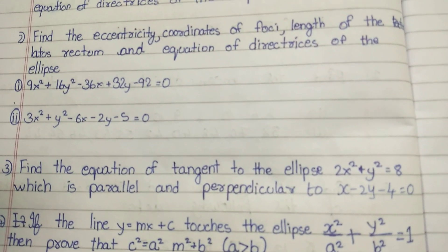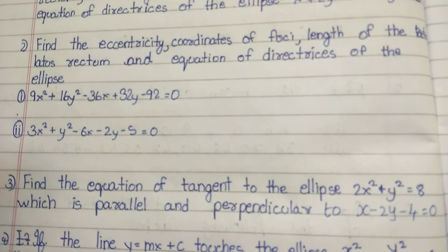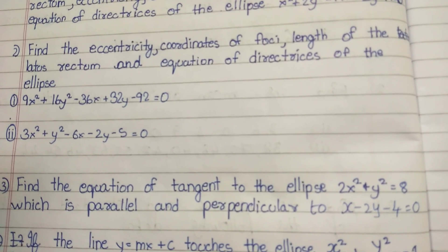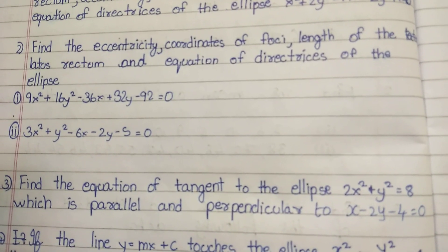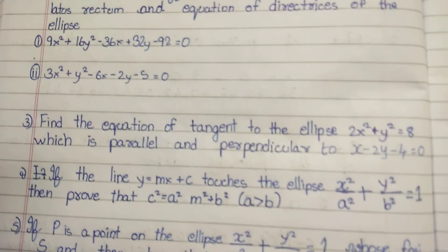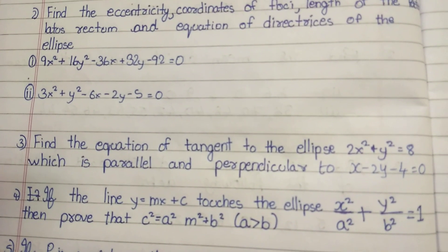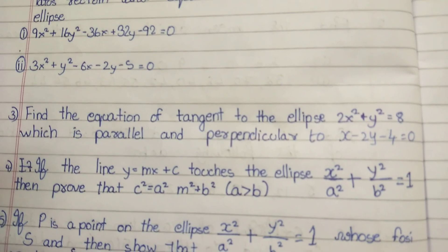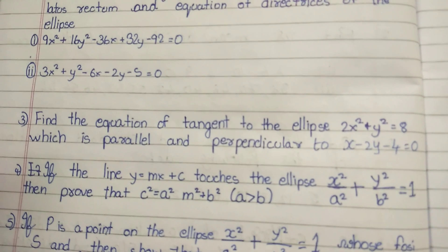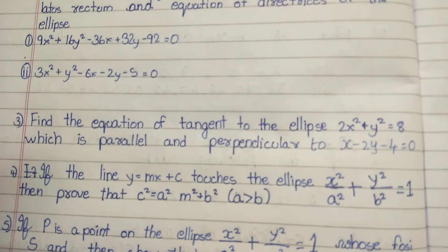Third one: find the equation of the tangent to the ellipse 2x² + y² = 8, which is parallel and perpendicular to x − 2y − 4 = 0. If the line y = mx + c touches the ellipse x²/a² + y²/b² = 1, then prove that c² = a²m² + b². The formula is applied — this is the theorem.